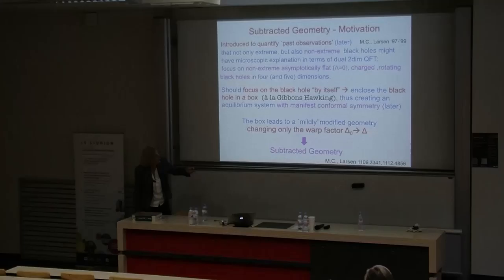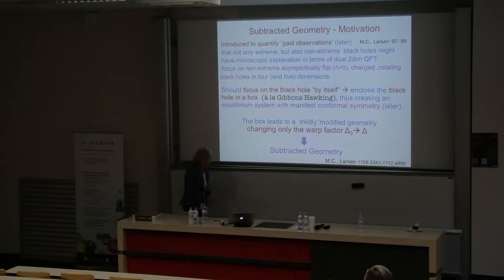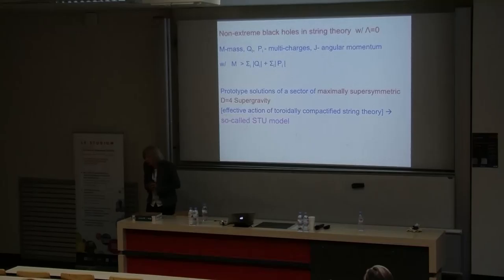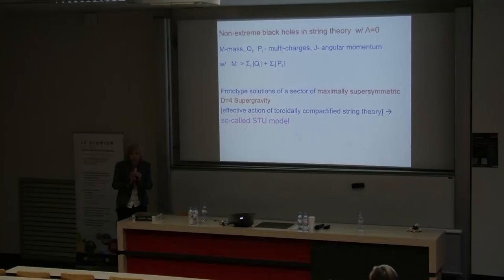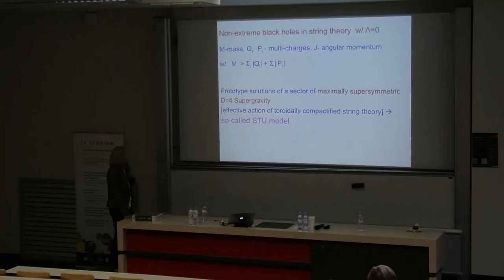The prototype will be solutions arising in maximally supersymmetric supergravities in four dimensions, basically the effective action of toroidally compactified string theory. Starting with 10-dimensional supergravity, an effective theory of type IIA or heterotic string theory, compactified on a torus to obtain four-dimensional maximal supersymmetric supergravity theories. A consistent truncation of such maximally supersymmetric supergravity theories is the so-called STU model. I have to stay within the effective action from string theory in order to motivate the microscopic or internal structure of non-extremal black holes.